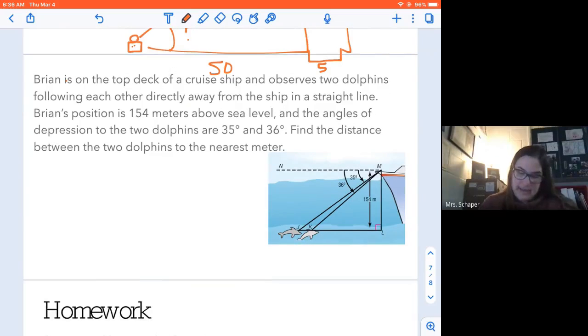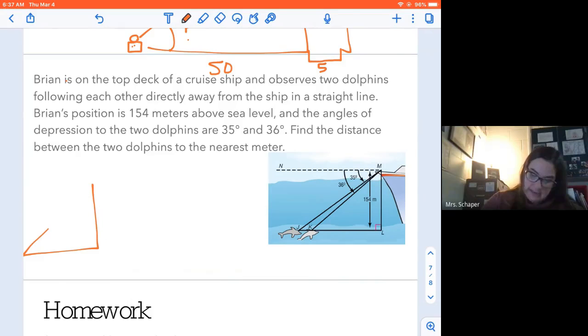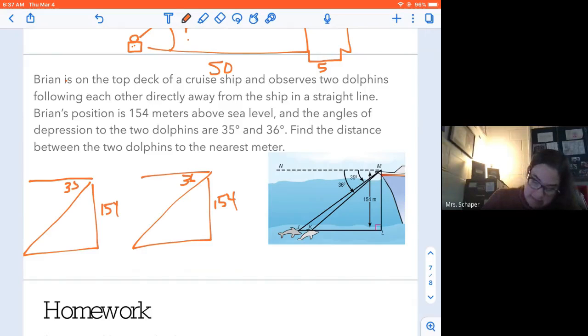Last one. Brian is at the top deck of a cruise ship and observes two dolphins below. Brian's position is 154 meters above sea level. And the angles of depression are 35 and 36. Find the distance between the two dolphins. Ooh, I like this problem. Okay. So here's what we're gonna do. I'm going to draw two different triangles. Totally not to scale. All right. In both of these cases, Brian is 154 meters above the ground. One has an angle of depression of 35. One has an angle of depression of 36. Okay. So that means this is 36. This is 35. We want to know the difference. So really this little area right here between the two dolphins. So what I can do is figure out how far each dolphin is and then subtract those amounts.